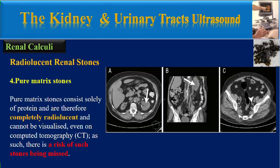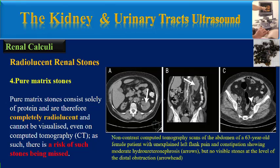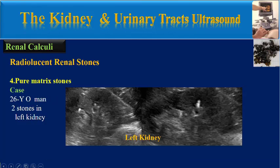This is an example of a pure matrix stone in a 63-year-old female patient with unexplained left flank pain and constipation, showing moderate hydroureteronephrosis but no visible stones at the level of the distal obstruction.